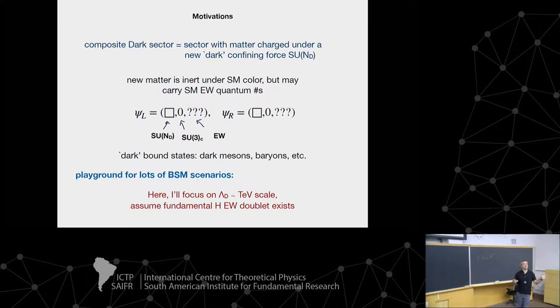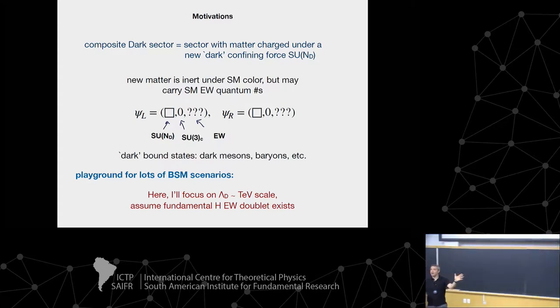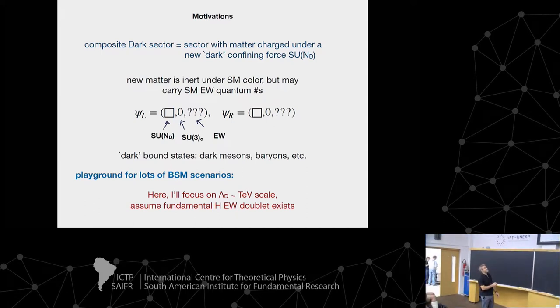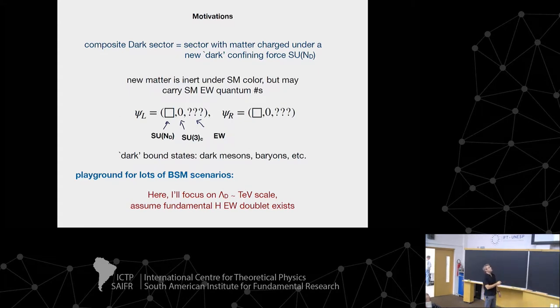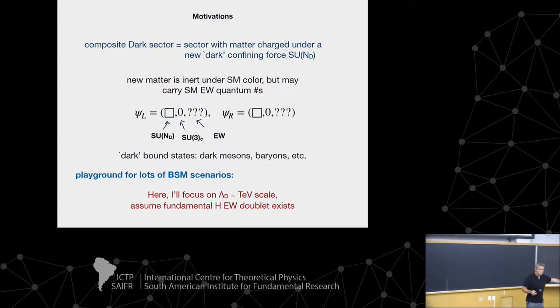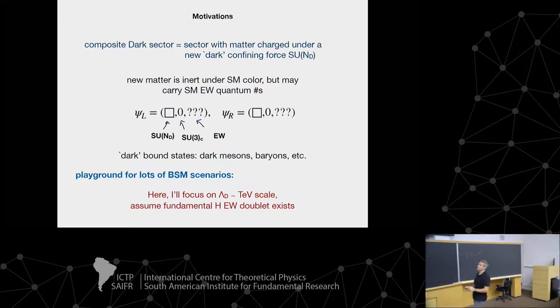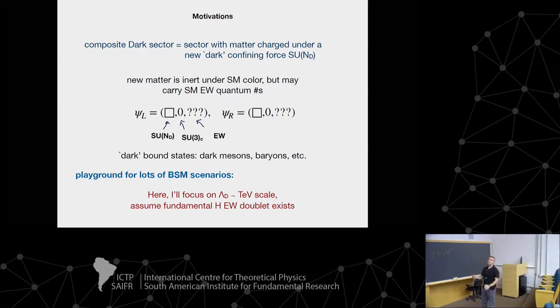I'm going to be working the whole setup throughout this is in a composite dark sector. I'm going to be talking about this new dark sector. Basically, I'm going to imagine that there's a bunch of matter, and I have a new confining force, not our QCD, just another SUN gauge group. So I'm going to stick in matter that's charged under this gauge group, not our color. It's going to be completely inert under our color, but perhaps some of this stuff has got electroweak charges. This is a super general framework.